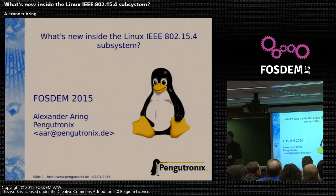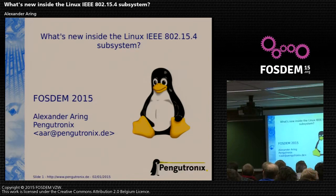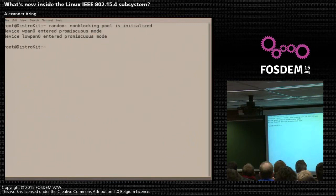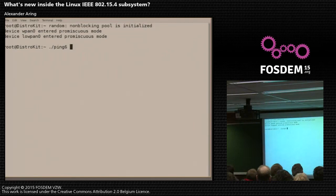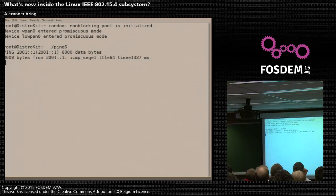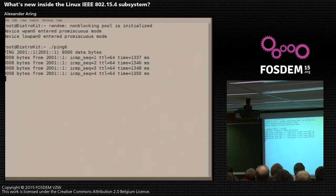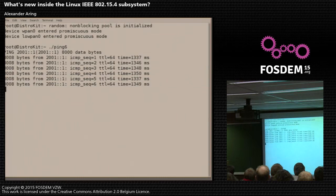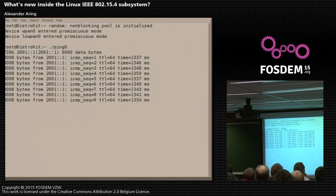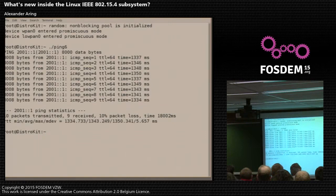Hello everybody. Welcome to my presentation about what's new inside the Linux IEEE 802.15.4 subsystem. First, I want to demonstrate a little demo. I set up two virtual machines and each have a USB IEEE 802.15.4 transceiver connected. I pinged between the nodes inside the virtual machines. It's a very high load ping, 8000 bytes. The round trip time is over a second, so it's very low bandwidth, also because of low power.